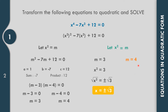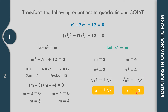So the four answers are: x = √3, x = -√3, x = 2, and x = -2. We have 4 answers because our highest exponent is 4.